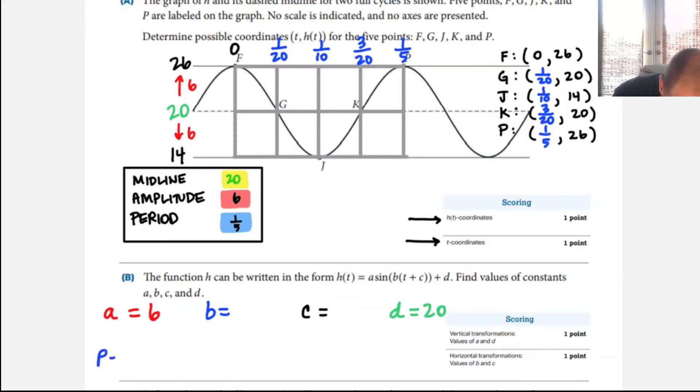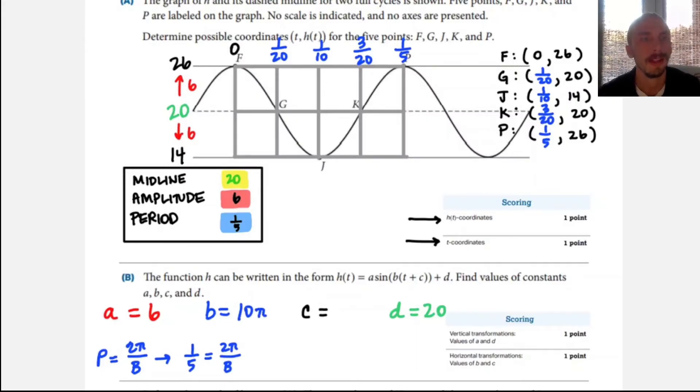And then finding the values of constants B and C, we're going to do a little bit more work, but we've got all the information we need. We know that for a sinusoidal function, period equals two pi over B. And we know the period is one fifth. So that's going to equal two pi divided by B. So if I cross multiply, I'm going to get B equals five times two pi, which is 10 pi.